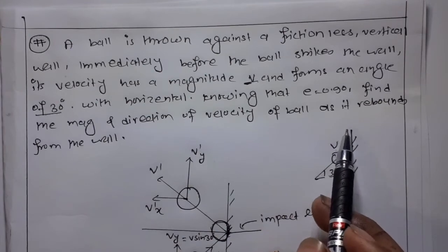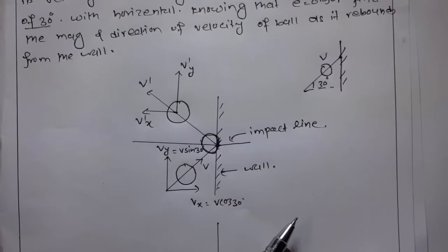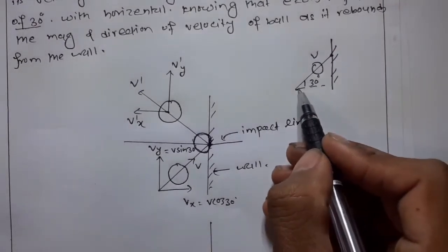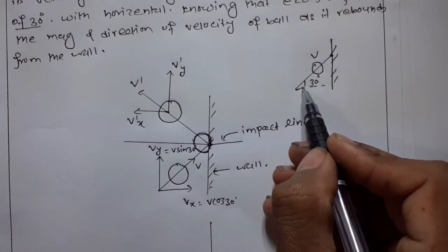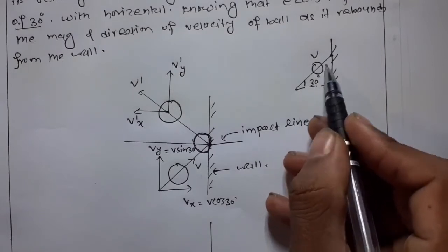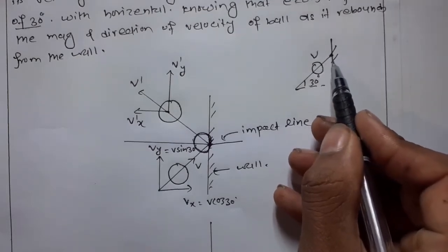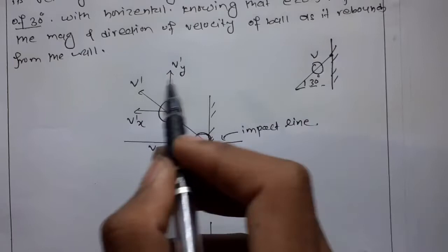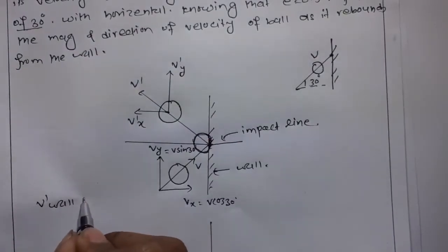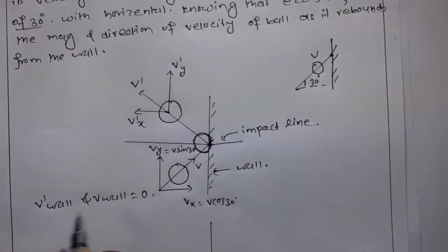Here is the figure. The ball has a velocity v which makes an angle of 30 degrees with the horizontal and strikes the vertical wall, then rebounds with a velocity v'. The wall velocity v_wall is 0.